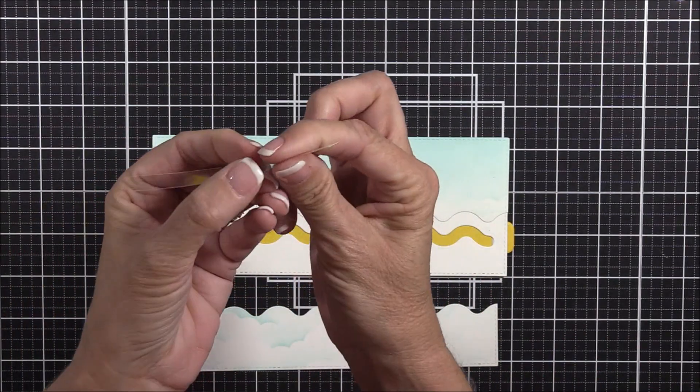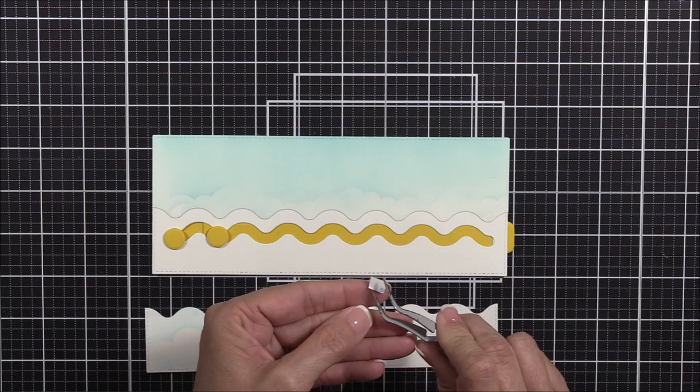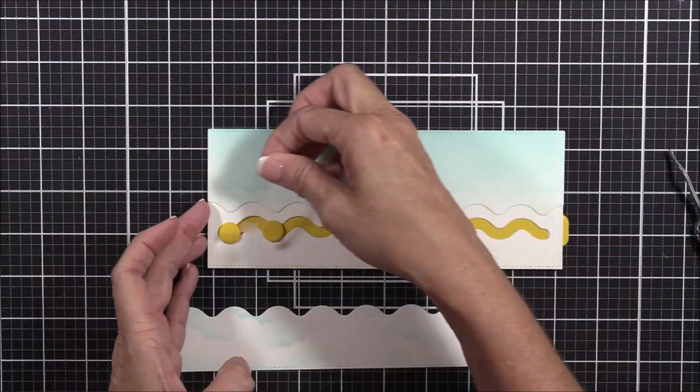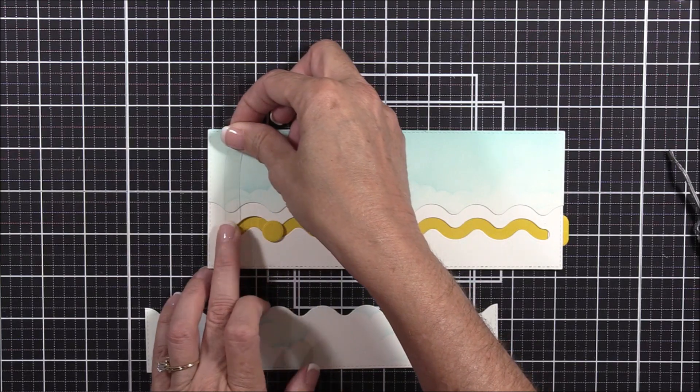Next, I trimmed an acetate strip that measures a little less than half an inch wide by about two inches long. I've adhered some quarter-inch double-sided tape to one end, and I'll adhere that to the left half-inch circle so that it's perpendicular to the slider channel.